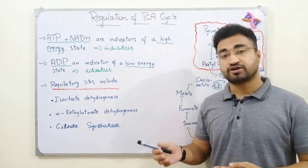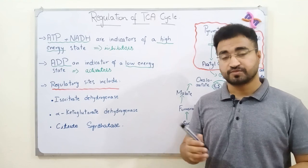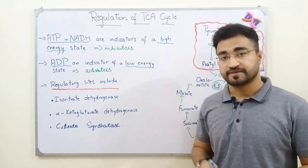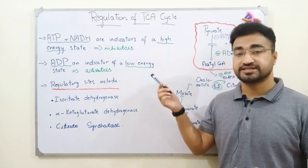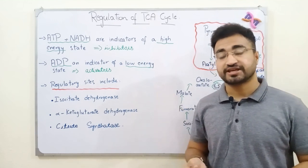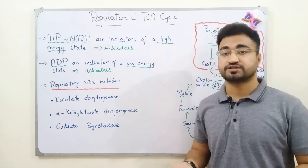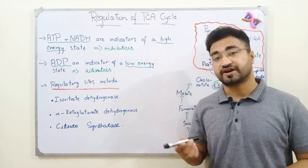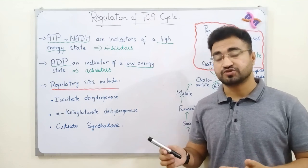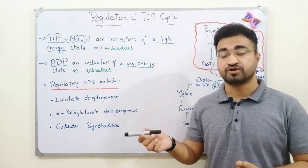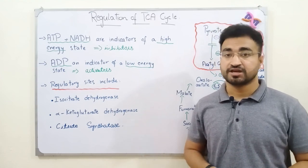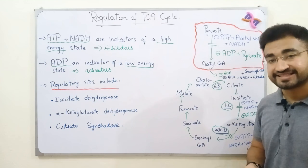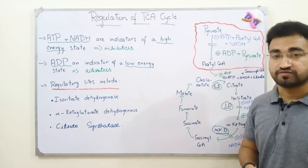Unlike glycolysis, which is regulated by hormones like insulin and glucagon both positively and negatively, the TCA cycle has no hormonal control because it is always in the on state. So the regulation that occurs in TCA is allosteric regulation. Allosteric regulation involves allosteric enzymes, which have an allosteric site in addition to their active site, where an effector molecule can bind and either activate or deactivate the enzyme.